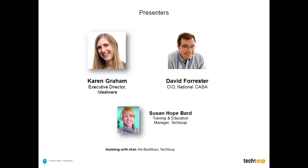I'm going to take a minute to introduce our presenters. We have Karen Graham, the Executive Director of Idealware, who leads a team of researchers, presenters, and writers who create technology information resources designed to help nonprofits put their vision into action. She has an MBA in nonprofit management from the University of St. Thomas. And David Forrester is here from National CASA, leading technology development and support as a member of their leadership team. National CASA supports and promotes court-appointed volunteer advocacy so that every abused or neglected child in the U.S. can be safe, have a permanent home, and an opportunity to thrive. Also on the back end, we have Ali Vizdikian, who will be helping you with any technical challenges.